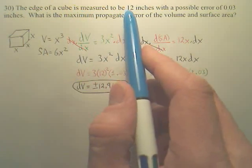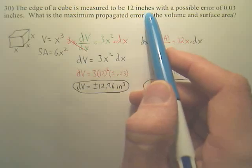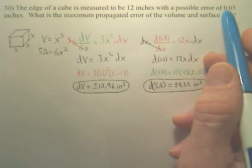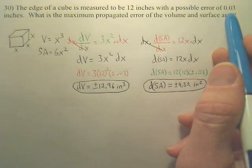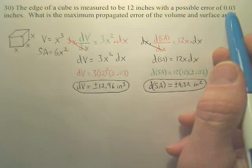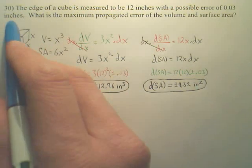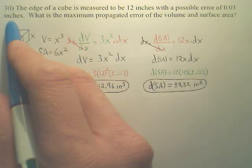The edges of a cube are measured as 1 foot, or 12 inches, with a possible error of 0.03 inches. I'm pretty darn accurate. If you're off by plus or minus 0.03 inches, this person can measure really well.